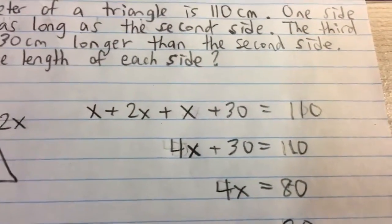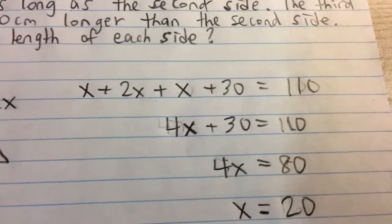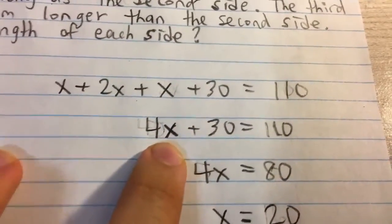And now we have an equation for x, we can solve for x and plug it back in to get our side lengths. And so here first, x plus 2x plus x, we collect like terms, that's 4x.